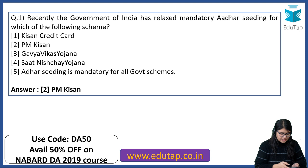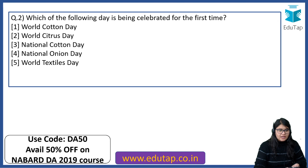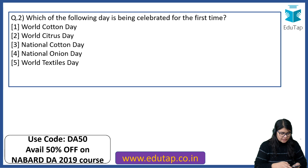The answer to the first question is PM Kisan scheme. Moving to the next question: which of the following day is being celebrated for the first time? I can see Aditya Jamwal joining in — thank you Aditya. Since not many friends are here, we will still continue with the session and I'll keep telling questions expecting answers from you. The correct answer here is World Cotton Day.